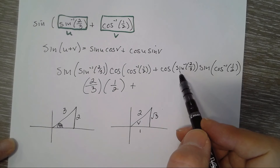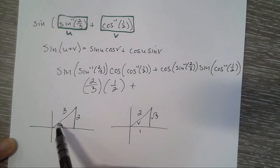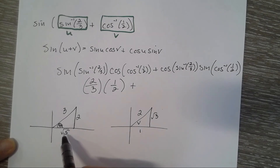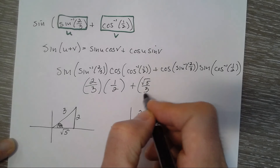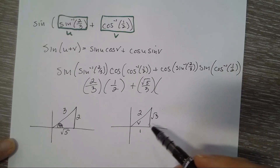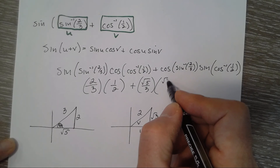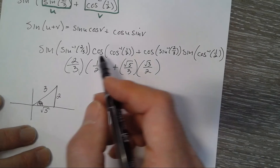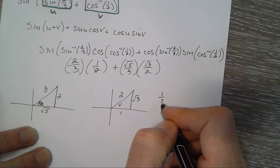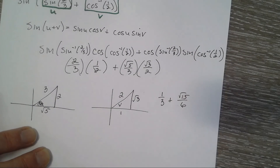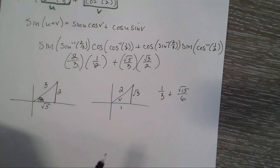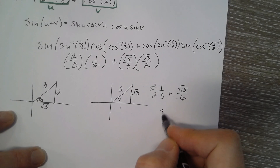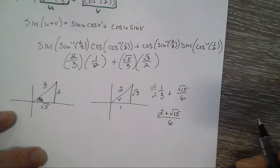For cosine of inverse sine of two-thirds: what angle has a sine of two-thirds? The missing side is the square root of nine minus four, which is square root of five, so the cosine is square root of five over three. For sine of inverse cosine of one-half: the sine of that angle is square root of three over two — opposite over hypotenuse. So two-thirds times one-half gives one-third, plus square root of fifteen over six. Converting to a common denominator: two over six plus square root of fifteen over six, giving a final answer of two plus square root of fifteen over six.